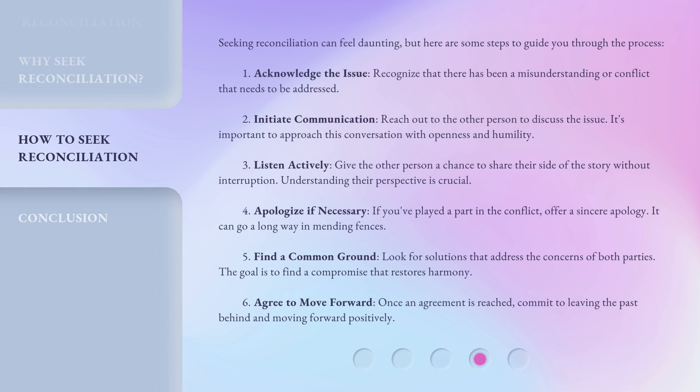Seeking reconciliation can feel daunting, but here are some steps to guide you through the process. 1. Acknowledge the issue — recognize that there has been a misunderstanding or conflict that needs to be addressed. 2. Initiate communication — reach out to the other person to discuss the issue; it's important to approach this conversation with openness and humility. 3. Listen actively — give the other person a chance to share their side of the story without interruption; understanding their perspective is crucial. 4. Apologize if necessary — if you've played a part in the conflict, offer a sincere apology; it can go a long way in mending fences.